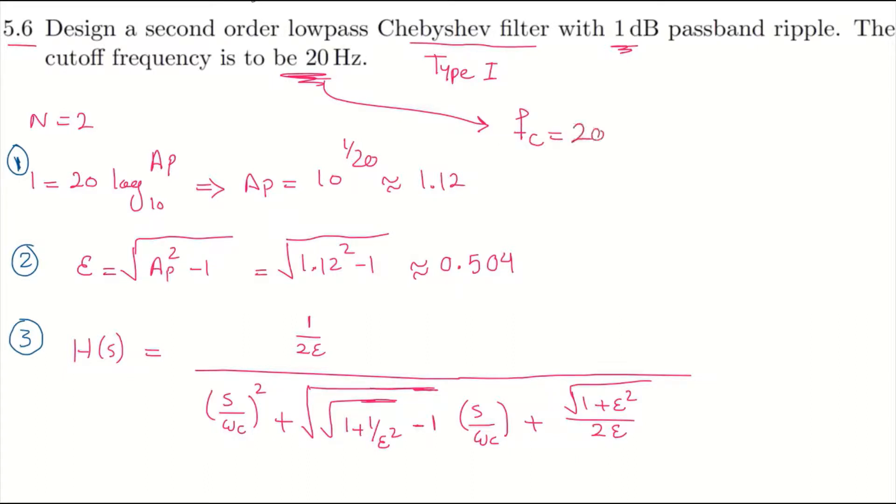That means the angular cutoff frequency is 40 times pi radians per second. So let me replace the things.